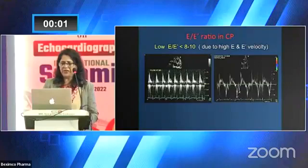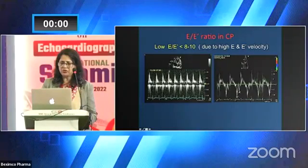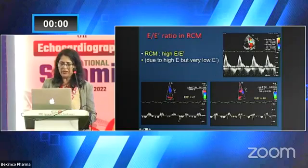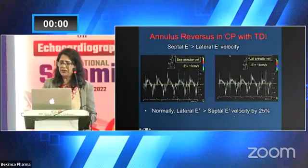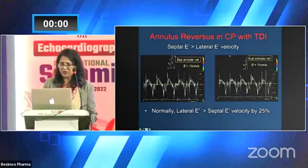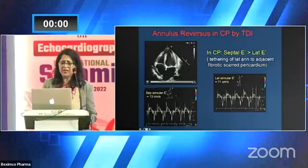Another unique feature in constrictive pericarditis is the E/E' ratio. Since both E and E' are tall, E/E' is less than 8–10. In restrictive cardiomyopathy, E is tall but E' is small, so E/E' is high. A very unique finding: normally, lateral E' velocity is greater than septal E' velocity. But in constriction, septal annular velocity is greater than lateral annular velocity. This is because the lateral annulus is adhered to the fibrotic scarred pericardium, restricting its longitudinal movement, while the septal annulus moves quite freely.